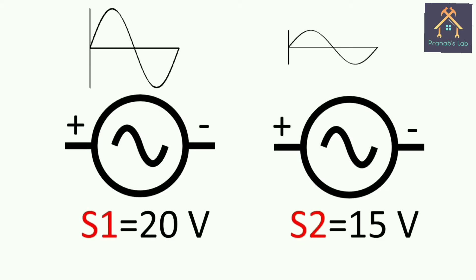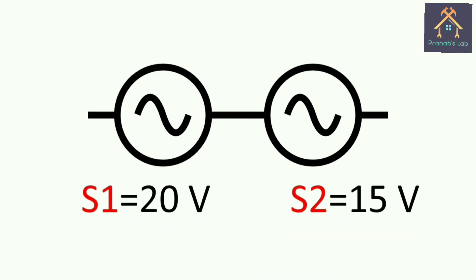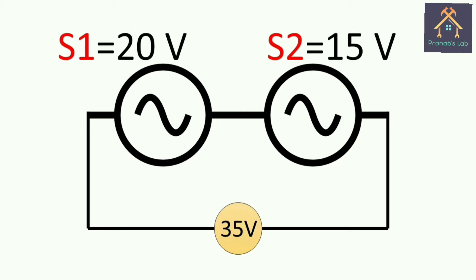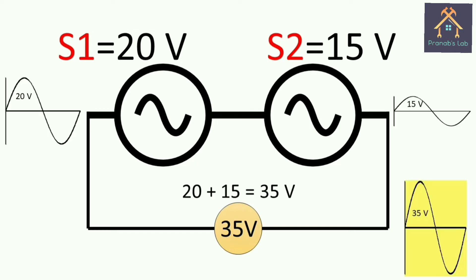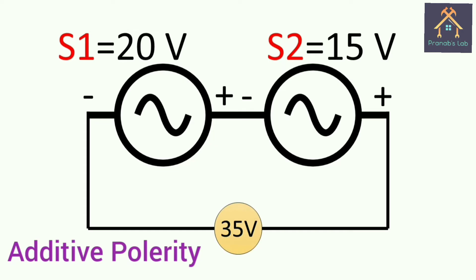There are two AC sources, S1 of 20V and S2 of 15V. They are connected in series. If the voltmeter reads 35V as resultant, then we can say that the sources are connected in additive polarity, and the sources can be marked like this.